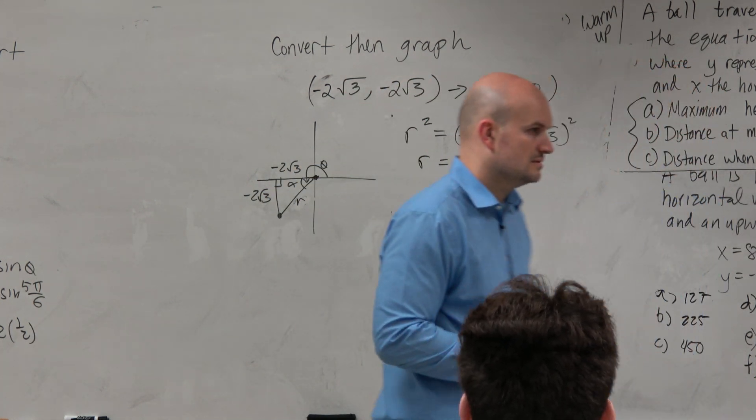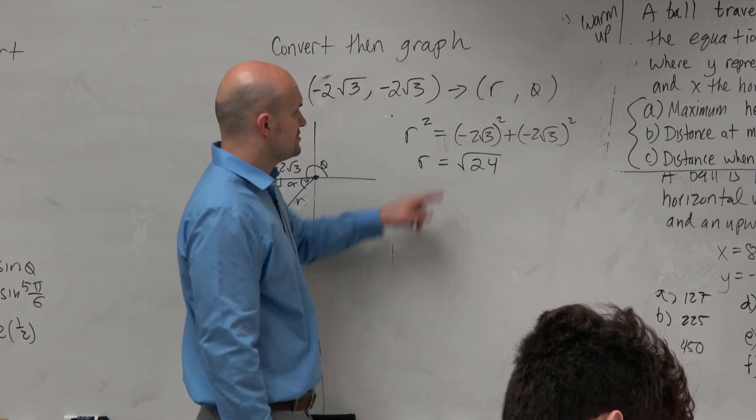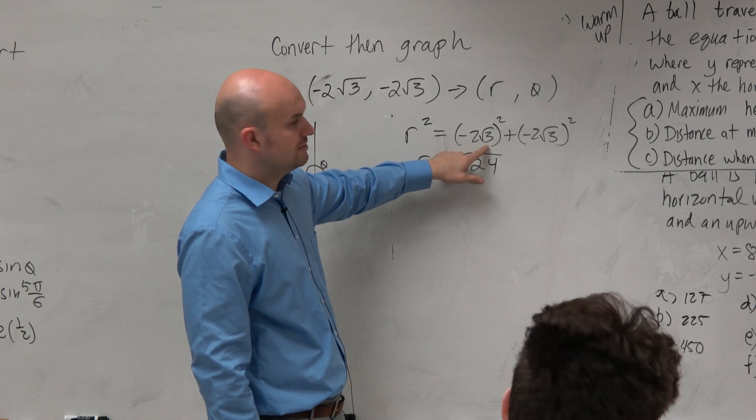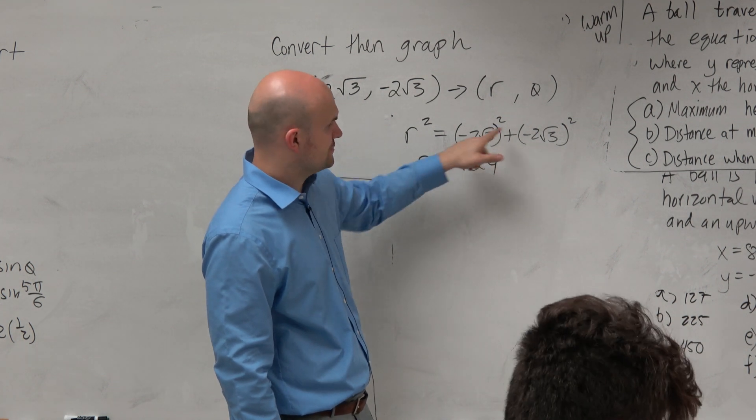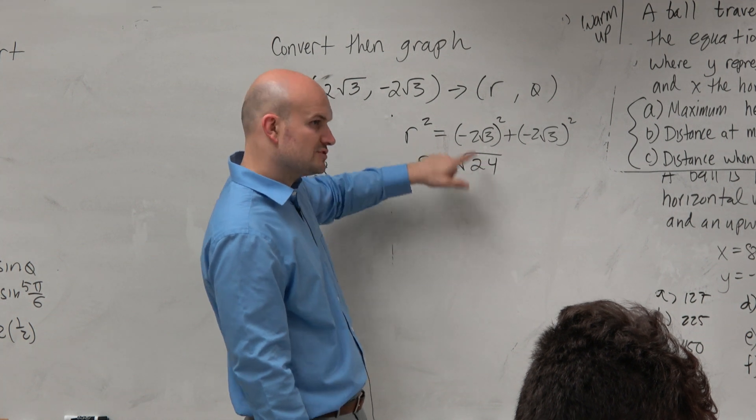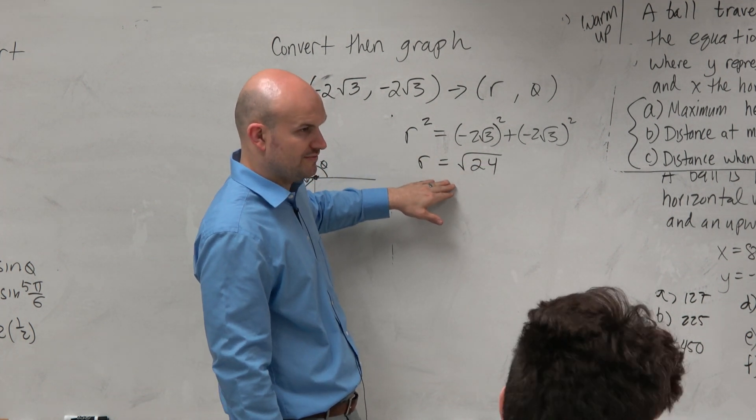Wouldn't this be the square root of 2 or 3? So this would be 4 times 3, right? 4 times 3 is 12, and this would be 4 times 3 which is 12, so 12 plus 12 is 24. So r squared equals 24, then you take the square root, so r equals square root of 24.